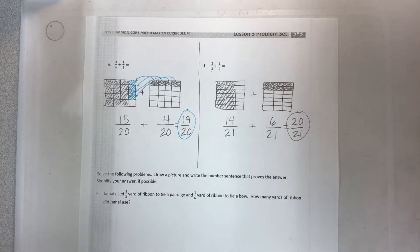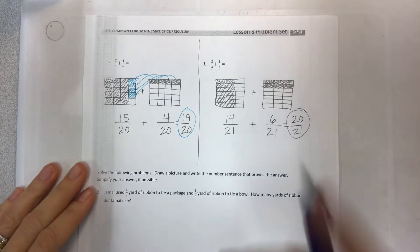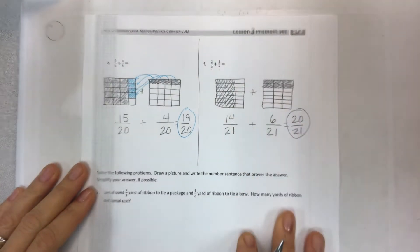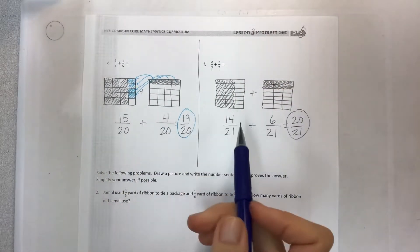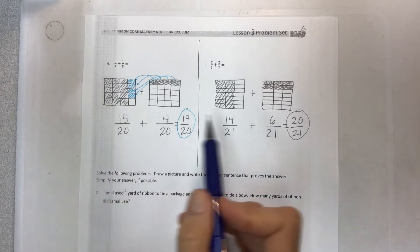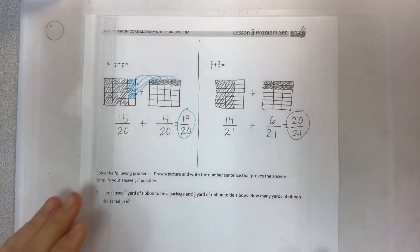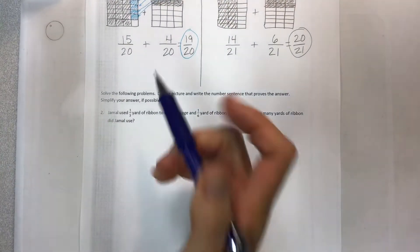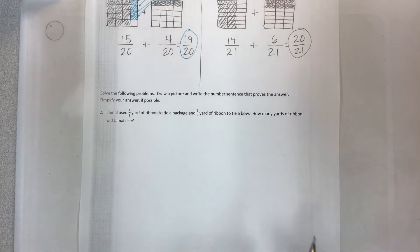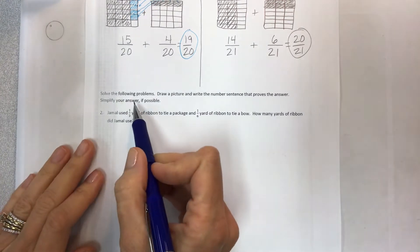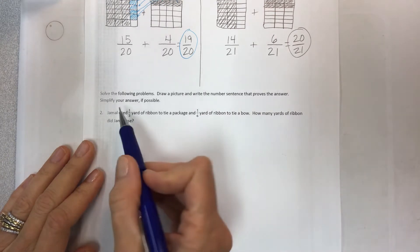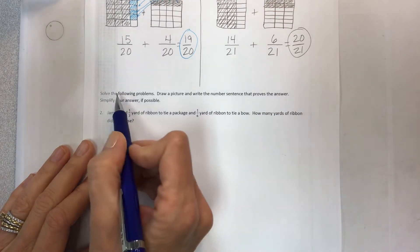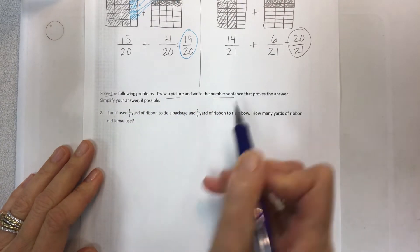Hey there kiddos and welcome back to the final video for lesson three in module three. This is the end here, E and F. See the previous video if you'd like to check out number one A through F, and let's do the word problems together. We are creating these area models to help us get like units when they start out being unlike. So solve the following problems, draw a picture - that's going to be your area model - and write the number sentence that proves the answer. Simplify your answer if possible.